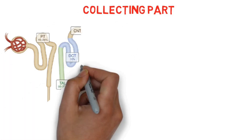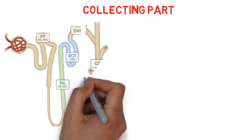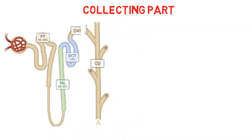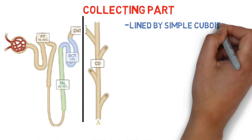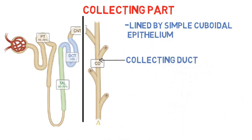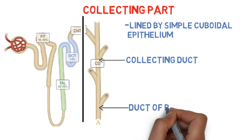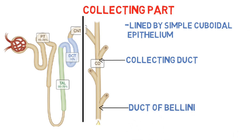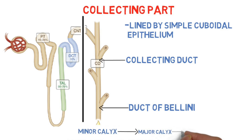Finally, the second part of the uriniferous tubule is the collecting part, which connects the nephron with the minor calyx. The collecting part is made up of the collecting tubule and the duct of Bellini. Collecting ducts of many nephrons drain into the duct of Bellini and then to the minor calyx. The urine then flows to the major calyx, then to the renal pelvis, and then to the ureter.